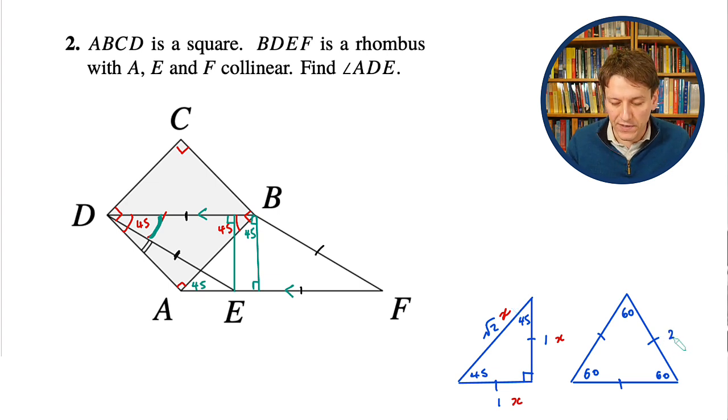Similarly for the equilateral triangle, we know if the side length is 2, then if I drop a perpendicular here, that bisects the base, so this length is 1, and by Pythagoras the height is root 3. You can use these triangles to write down sin, cos, and tan of 30, 45, and 60, but we can just use them directly here as well.